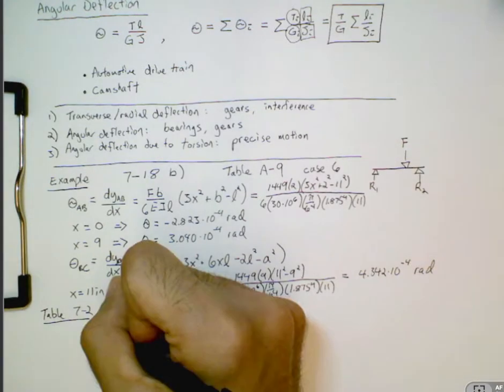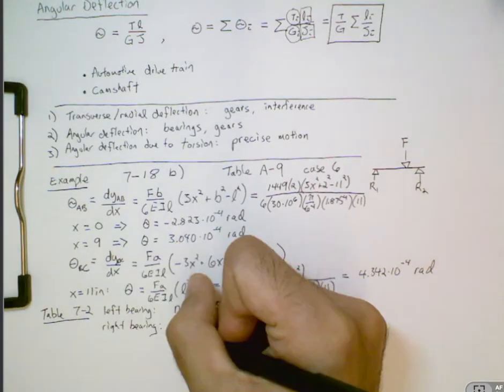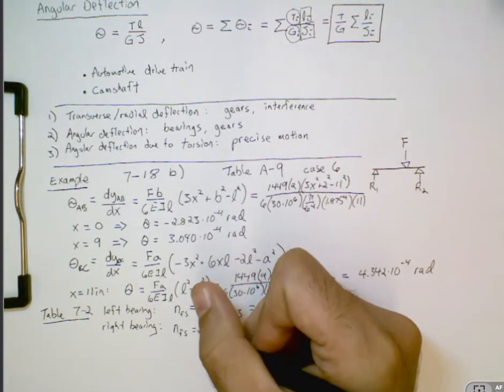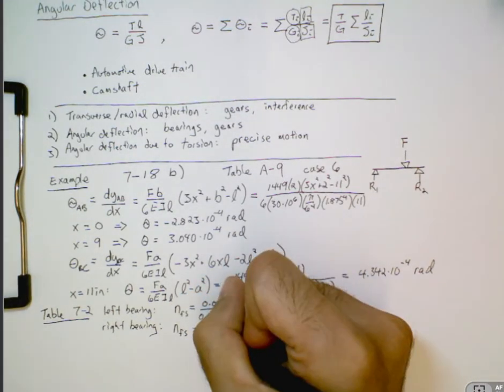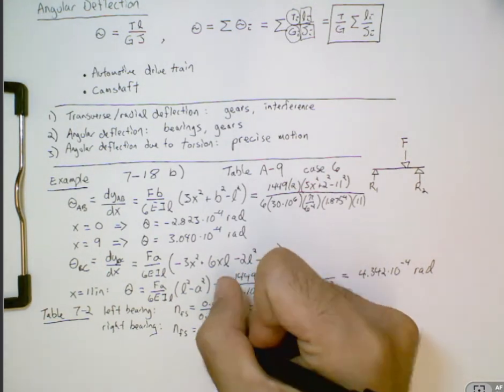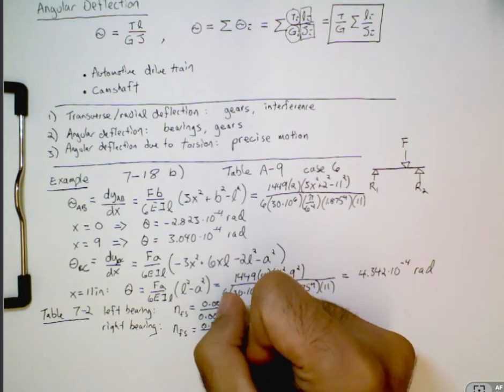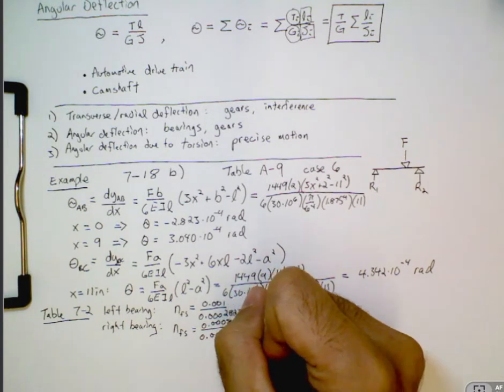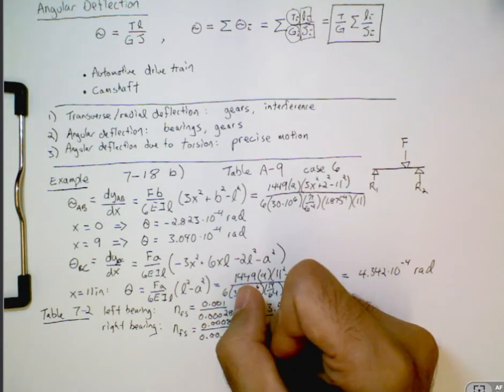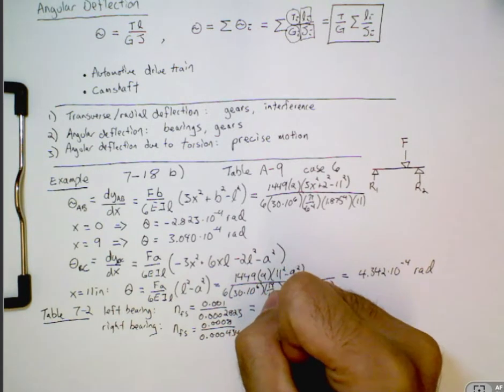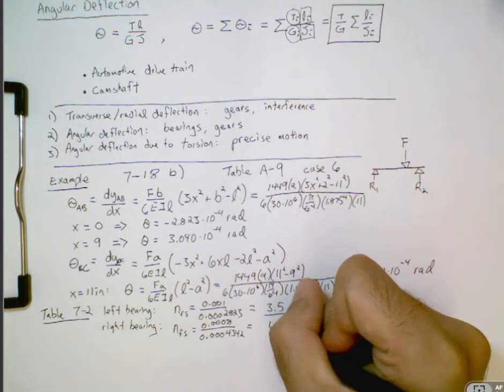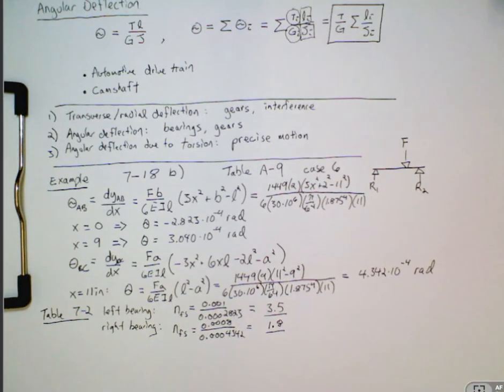And then the right bearing, again we have the same. In this case we want a smaller slope and divide that by the actual slope. And so we get a noticeably smaller safety factor, but it's still probably acceptable.